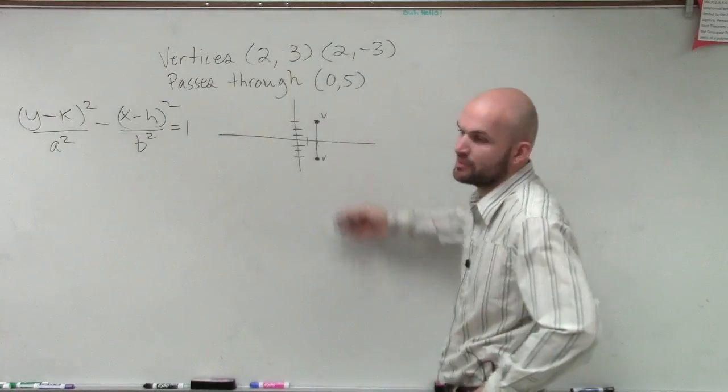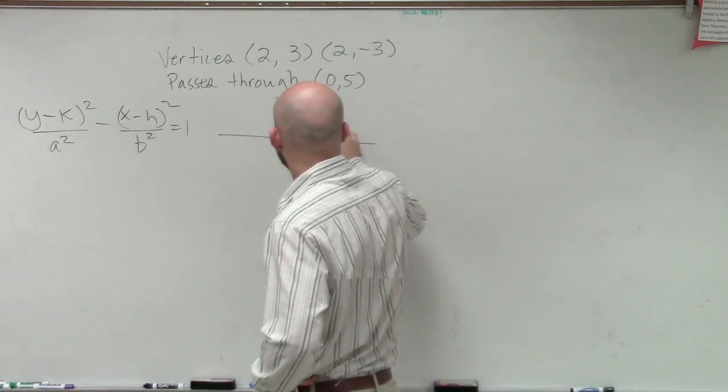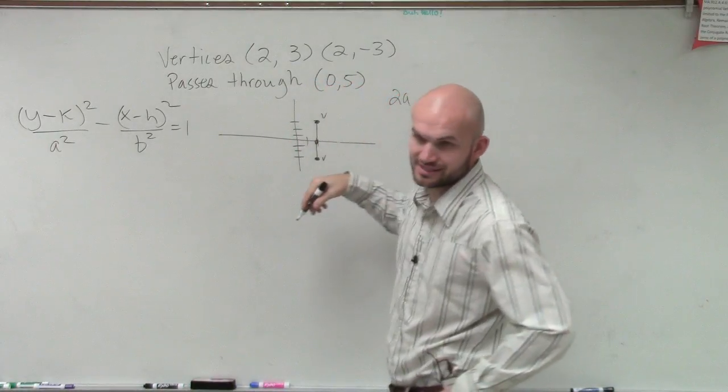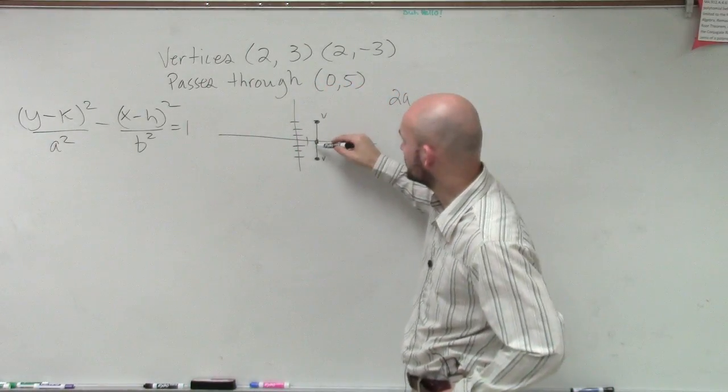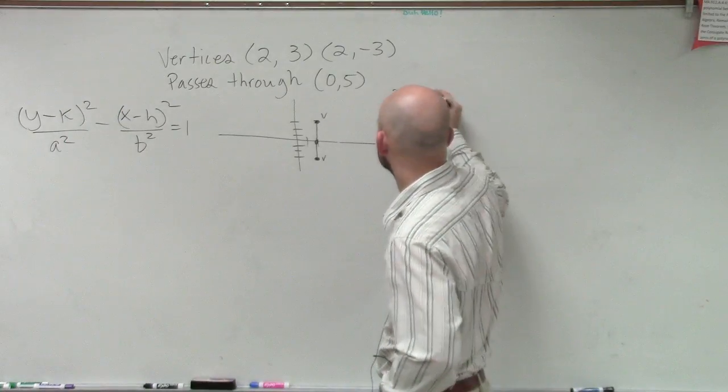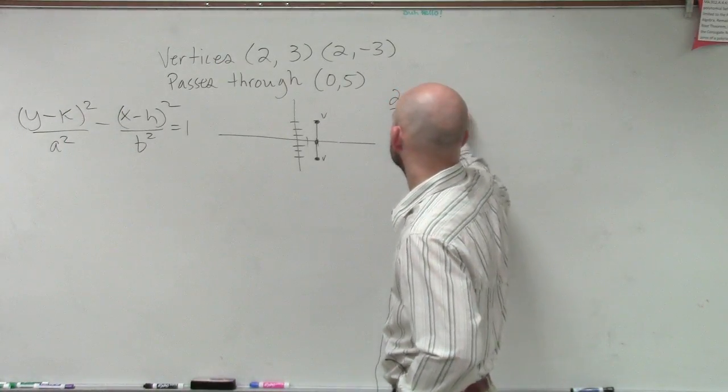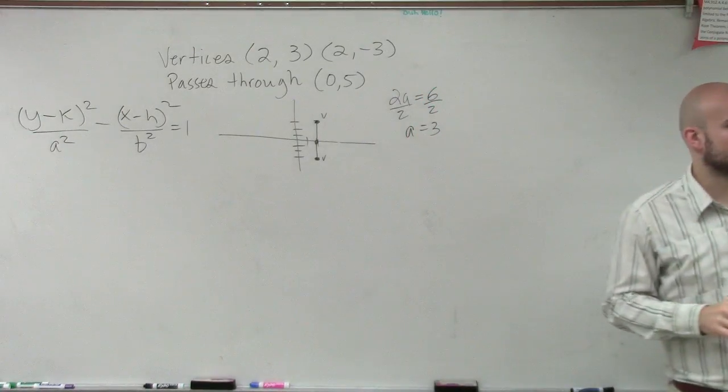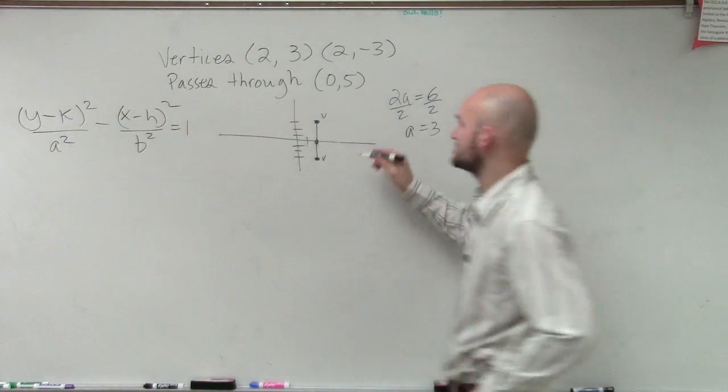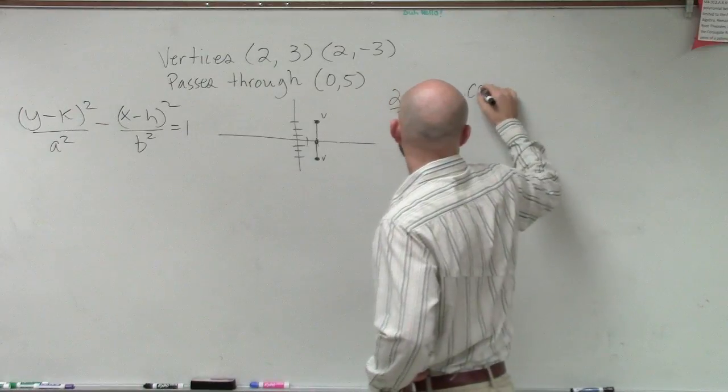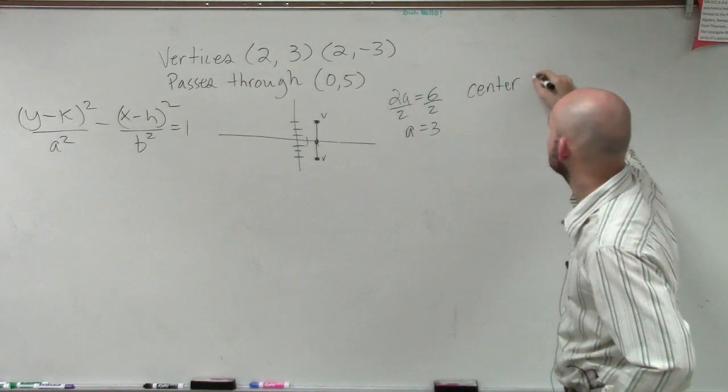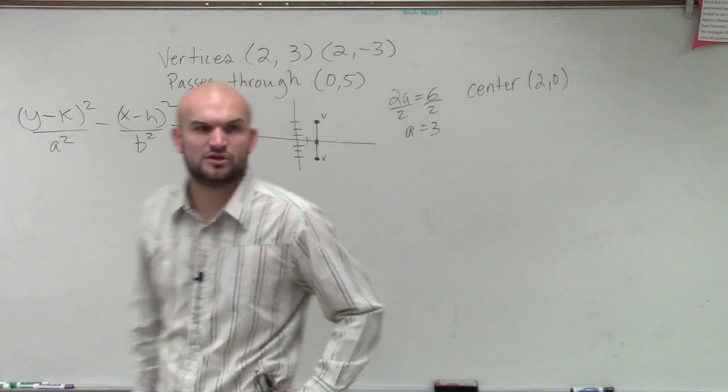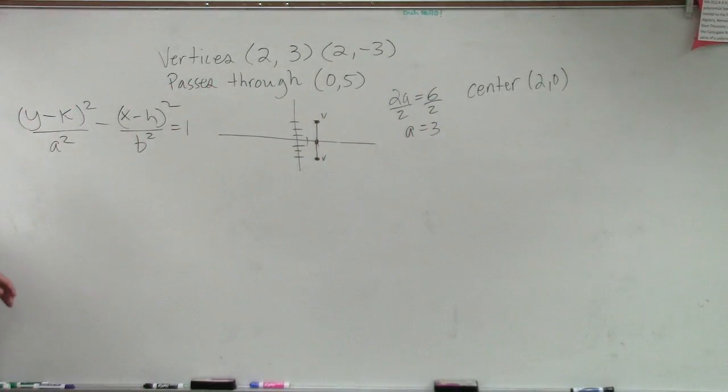Well, our center, remember, is halfway between our two vertices, right? So we can just plot and say it's 2a, which is the distance between your two vertices: 1, 2, 3, 4, 5, 6, so divided by 2, a equals 3. So now we know what a² is. And we also can determine our center is at (2,0). So let's put in that information right now.